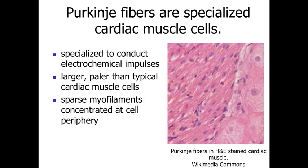The Purkinje fibers are specialized cardiac muscle cells. You can see normal cardiac muscle on the left and Purkinje fibers to the right — they are larger cells, paler staining because they have fewer myofilaments. They are relatively large because they are involved in the rapid transmission of the electrical impulse throughout the ventricles, delivering it to the ventricular cardiac muscle cells to allow for forceful, coordinated contraction of the ventricles of the heart.